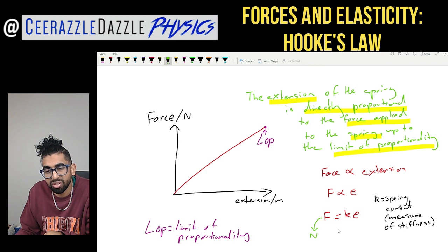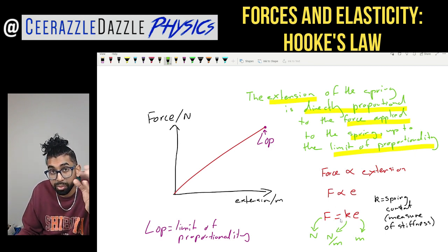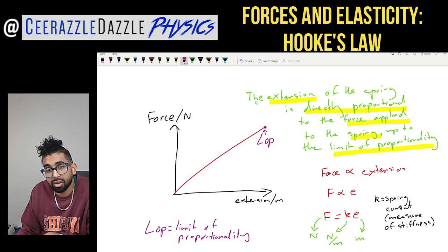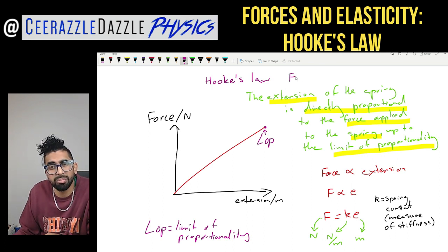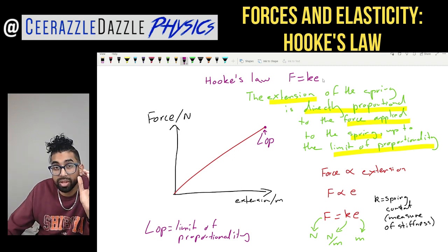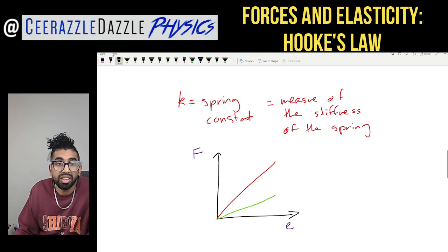The spring constant k is a measure of how stiff the spring is. For the formula F = ke: F is measured in newtons, e is the extension in meters, and therefore k has units of newtons per meter. The definition — that extension is directly proportional to force up to the limit of proportionality — is more commonly known as Hooke's Law: F = ke.